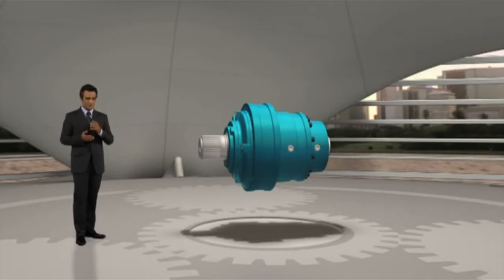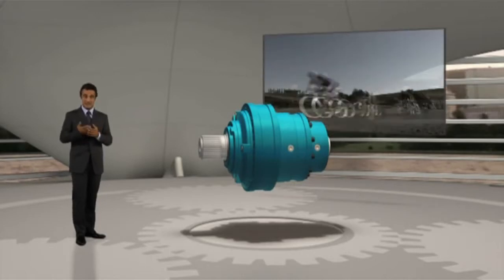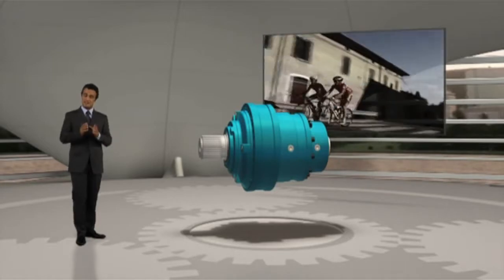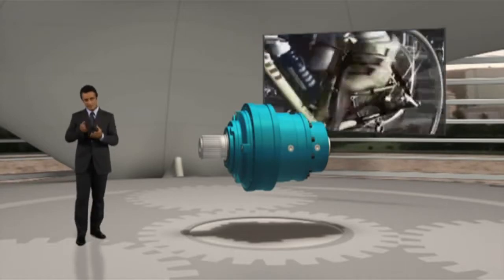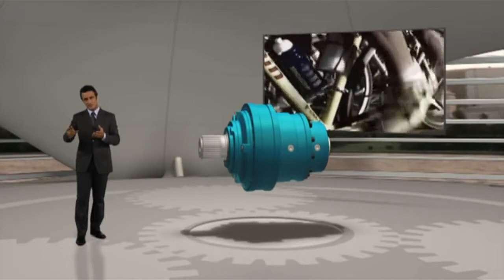While they reduce the speed, they also multiply the force applied, known technically as torque. Bicycle gears are the most common example. The cyclist can use the same effort to cover endless distances quickly or climb the steepest alpine passes.